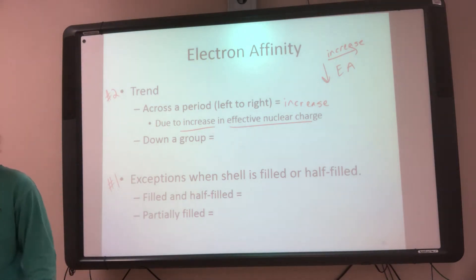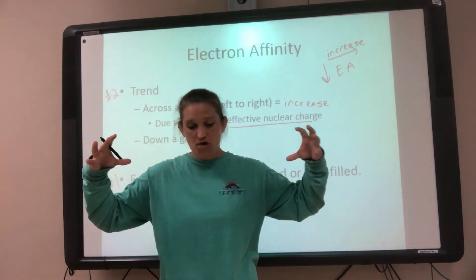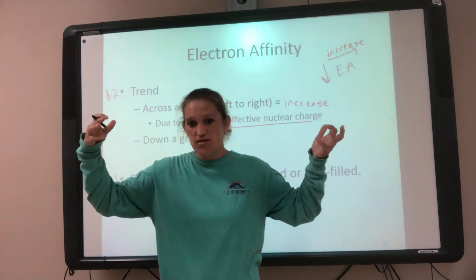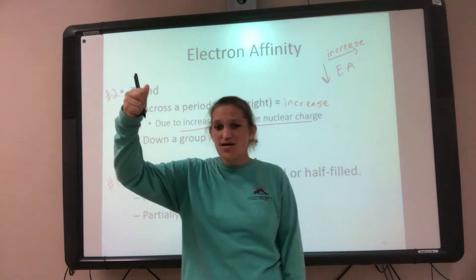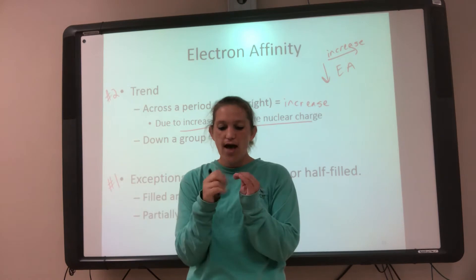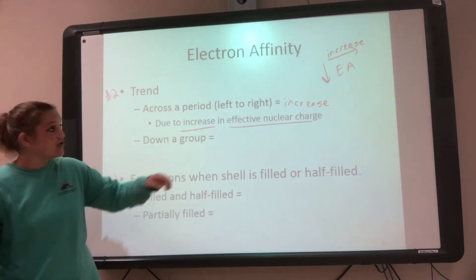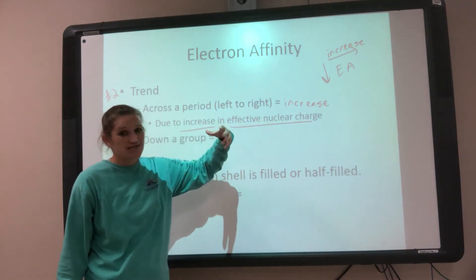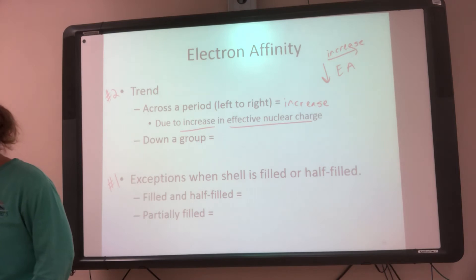When I go down a group, my atom gets bigger — my size gets bigger. So if my size gets bigger, I'm getting really far away from my nucleus. If I have a big atom and my electron comes in, it's really far away and doesn't really feel those protons — it doesn't really want to stay. But if it's a smaller atom, it's okay staying. So if I'm going down a group my size increases, meaning the electrons I'm going to want to add decreases — my electron affinity decreases.